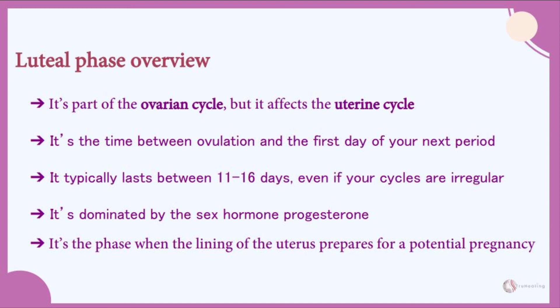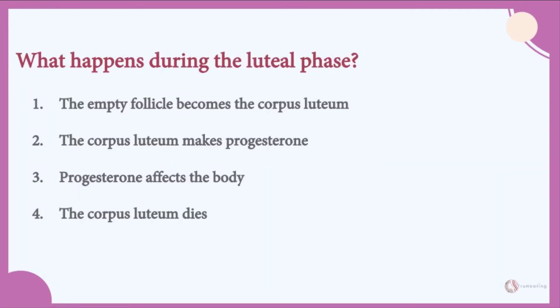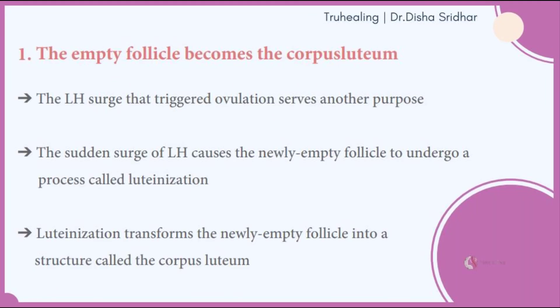The luteal phase is dominated by the sex hormone progesterone, which prepares the uterine lining for a potential pregnancy. Here's a summary of what happens: the empty follicle becomes the corpus luteum; the corpus luteum makes progesterone; progesterone affects the body and uterine lining; and then the corpus luteum eventually dies.